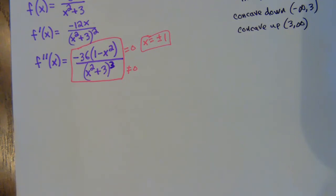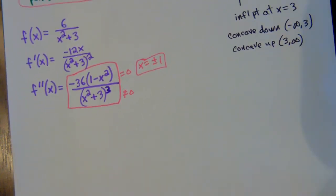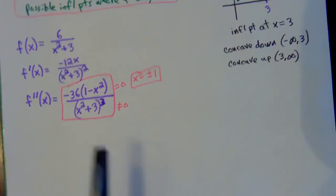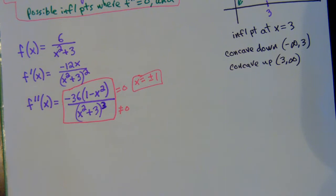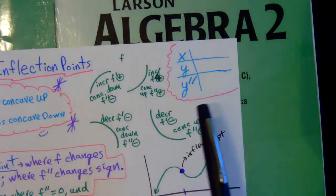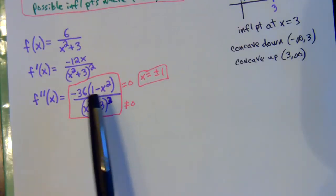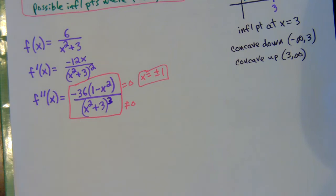We'll apply the first and second derivative together, work on understanding-type problems going back and forth between the two, which will help for college-level content and the AP test. Right now we'll do one example: given a function, find intervals where it's concave up or concave down and any inflection points. For that, find the second derivative and make an x, y, y-double-prime chart.